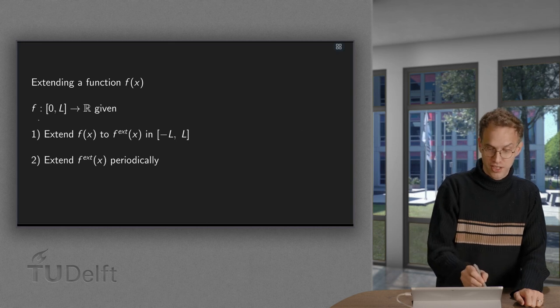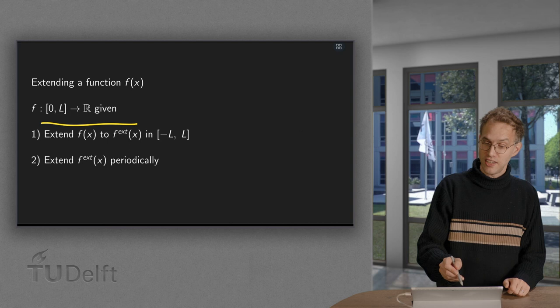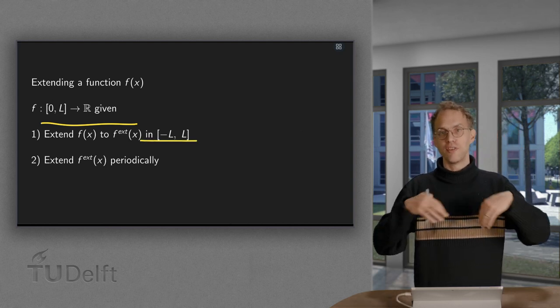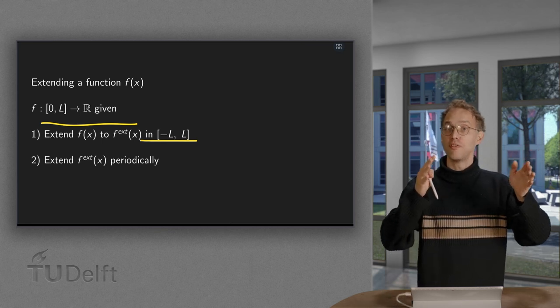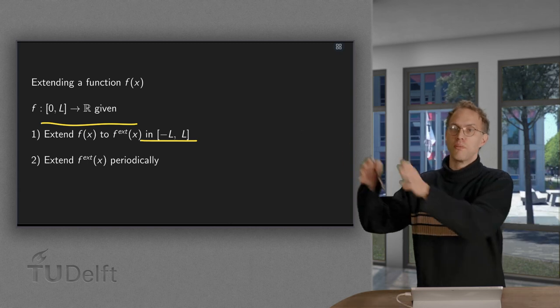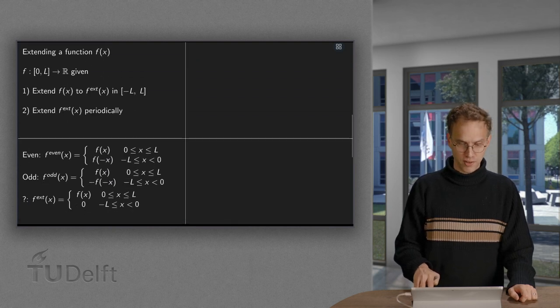So we have some function given, but only between 0 and L. At first we have to extend it in some way between minus L and L, and then after that we can just extend it periodically, so make copies from the function we have between minus L and L, and just place all the copies after each other. So the second step is trivial. But what about the first one?